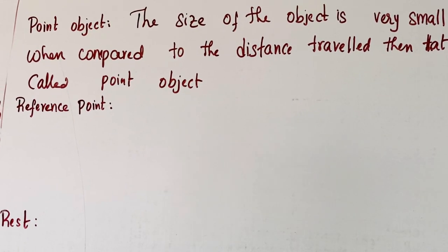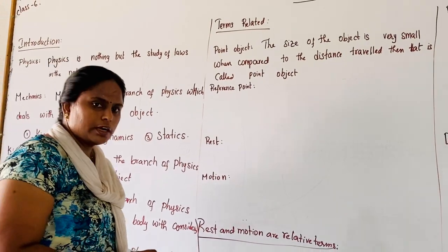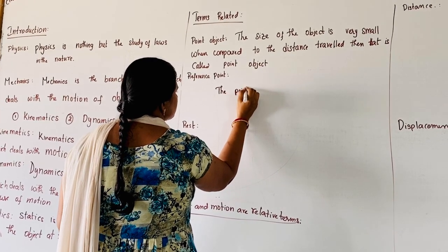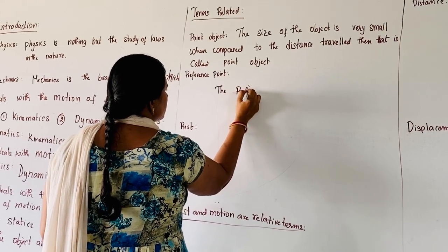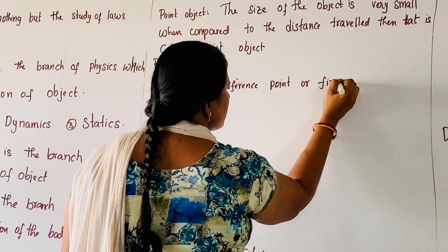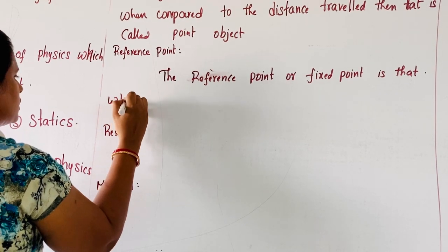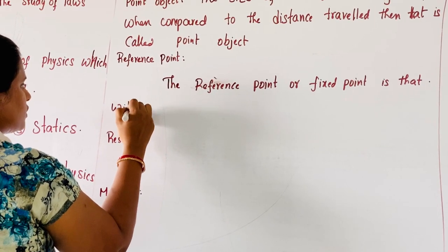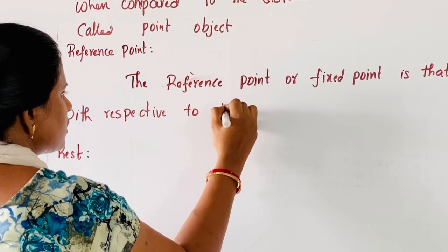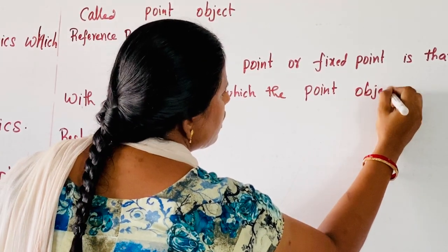Now the next term is reference point. A reference point is nothing but with respect to what position the object is considered to be moving. It is also called a fixed point. The reference point or fixed point is that with respect to which the point object is moving.